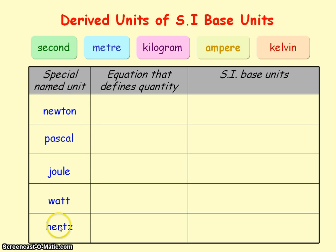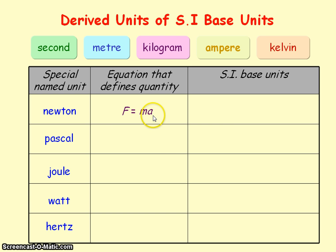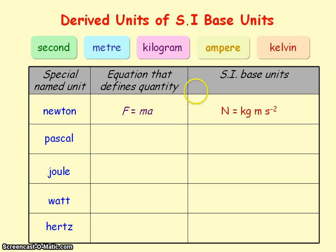Some derived units have special names which we can express in terms of SI base units by using equations that define the quantity of the special unit. The equation used to define the newton is F equals ma. So force is measured in newtons, and a newton is equal to kg multiplied by meters per second squared, giving kg meters per second squared.